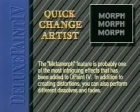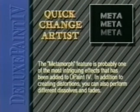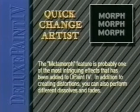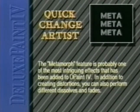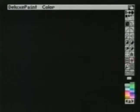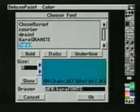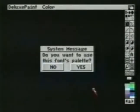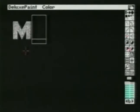The MetaMorph feature is probably one of the most intriguing effects added to Deluxe Paint 4. In addition to creating distortions, you can also perform different dissolves and fades. In this example, we will be using low-resolution HAM. We'll first need our brushes to be morphed, using the Chara Granite font. We'll need two brushes: first being 'Meta' and second being 'Morph'.